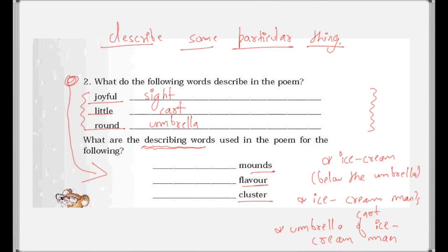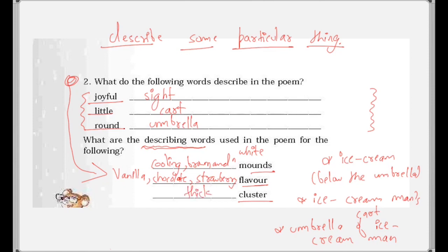Then what are the describing words used in the poem for the following words? We need to find describing words from the poem. For 'mounds' we have: cooling, brown, and white — as the poem says mounds of cooling brown and white. For 'flavor' we have: vanilla, chocolate, and strawberry. For 'cluster' we have: thick — the children cluster as thick as honeybees.